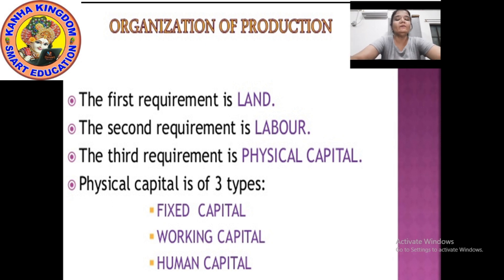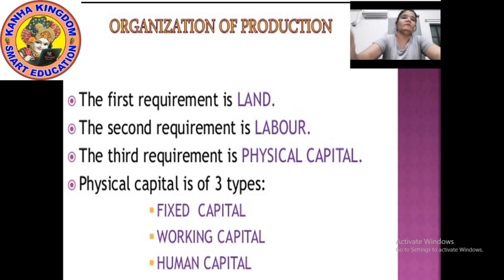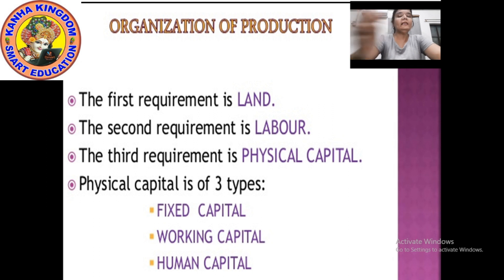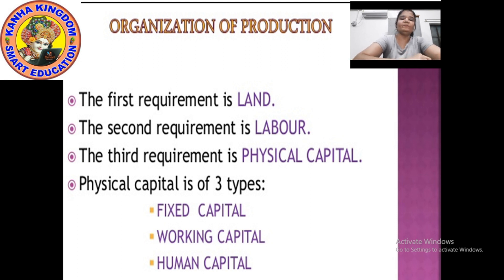Now for the second requirement — it is the labor. If you have a big land and you want to produce something, whether it is any kind of building, factory, or agriculture, one man alone cannot do agriculture on the land. So the second thing which has been needed after the land is the labor — the people who will do the work. Without labor we cannot produce anything.